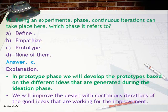Question 11: Being an experimental phase, continuous iterations can take place here — which phase does it refer to? a) Define, b) Empathize, c) Prototype, d) None of them. Answer: C. Explanation: In the prototype phase, we develop prototypes based on the different ideas generated during the ideation phase. We improve the design with continuous iterations of the good ideas that are working.